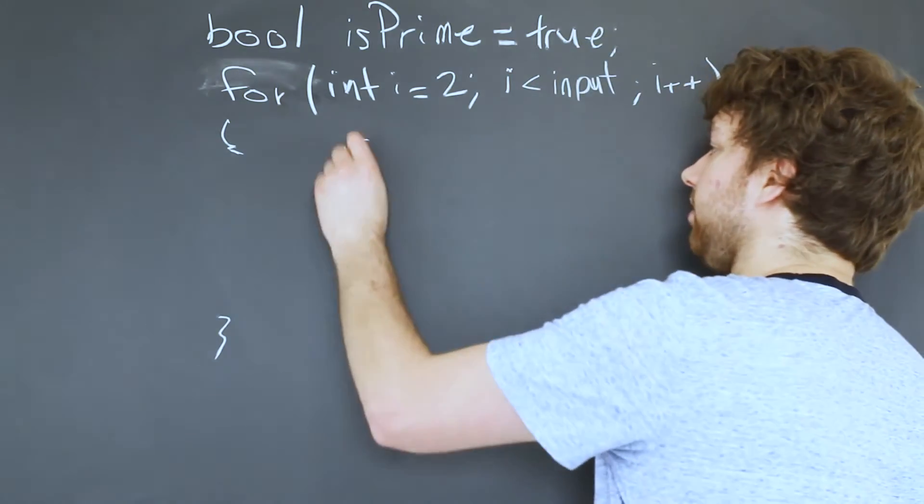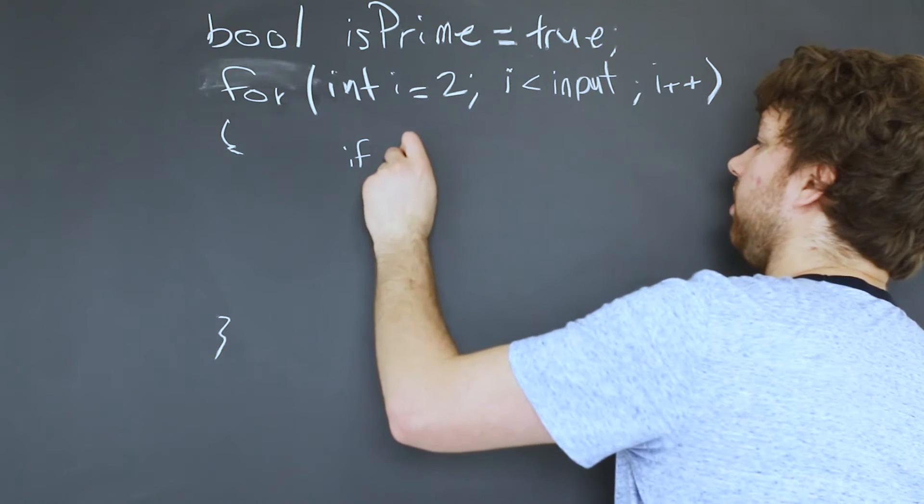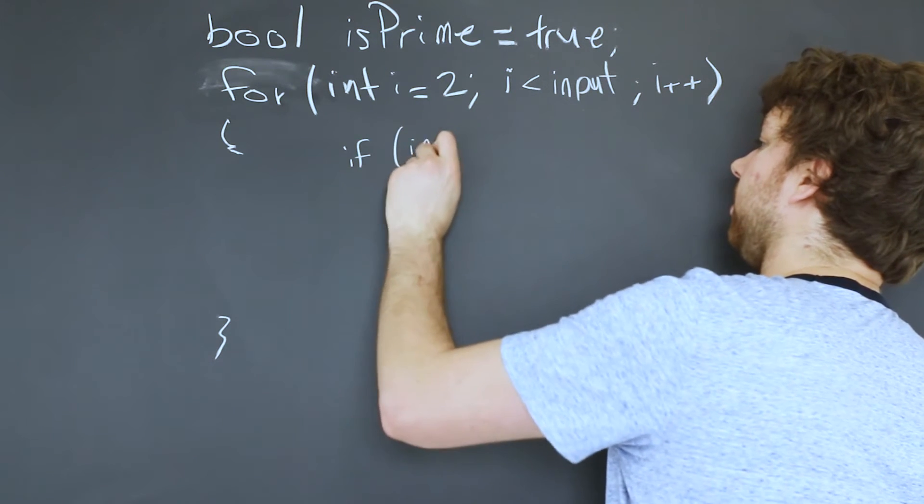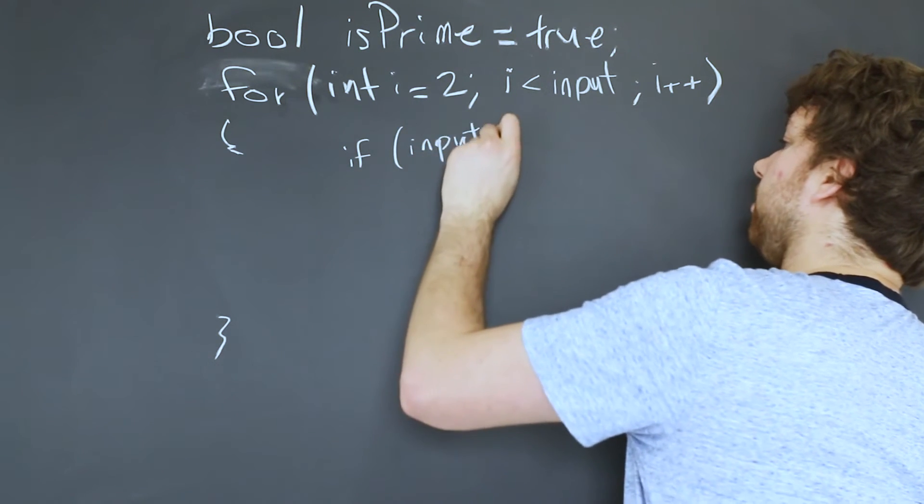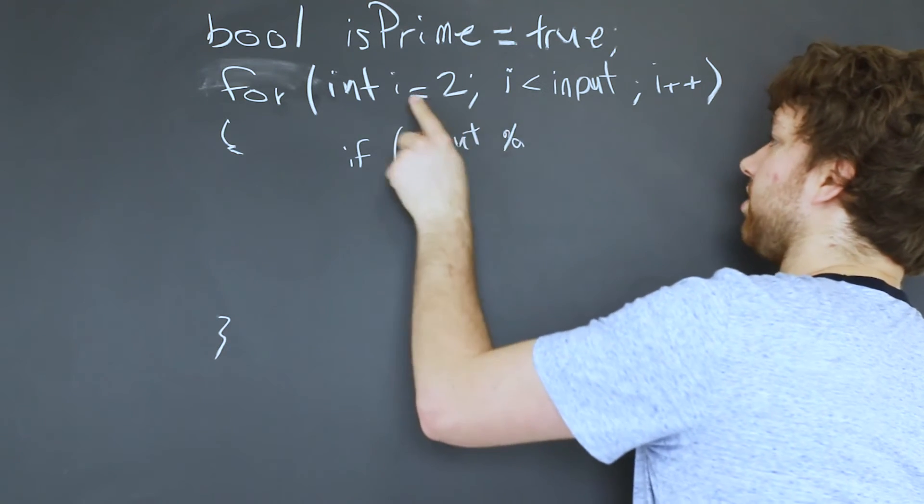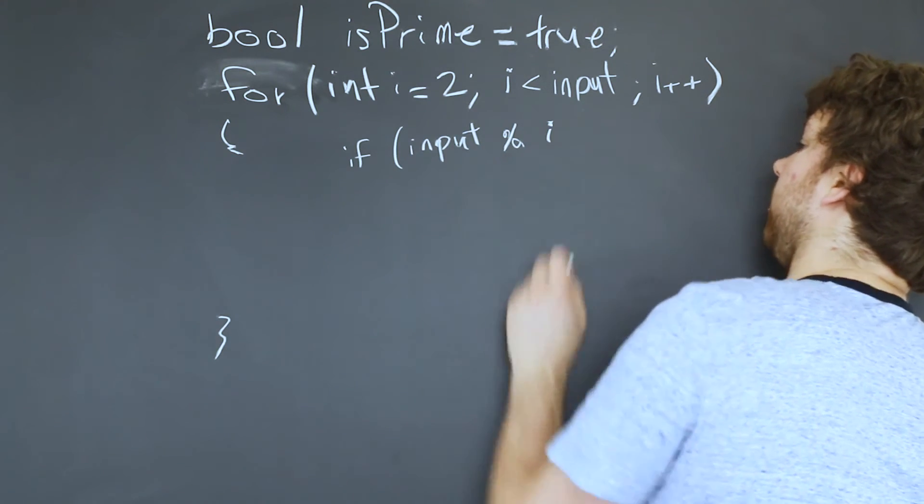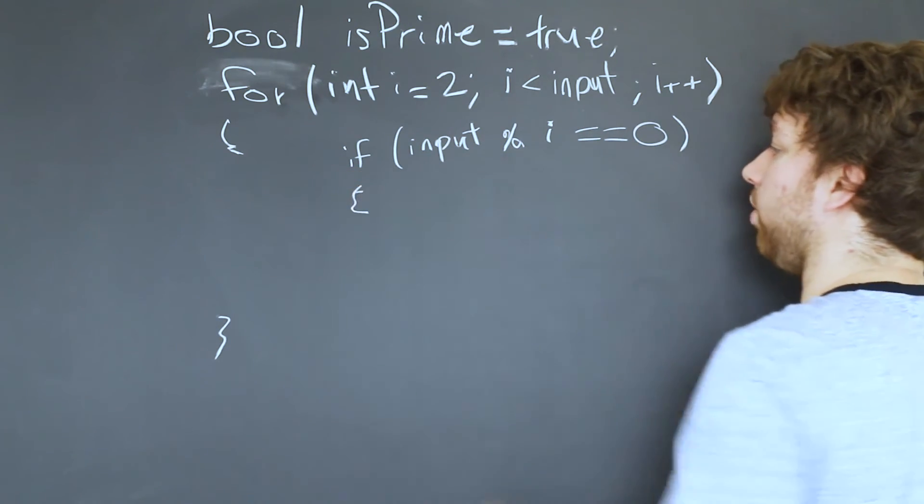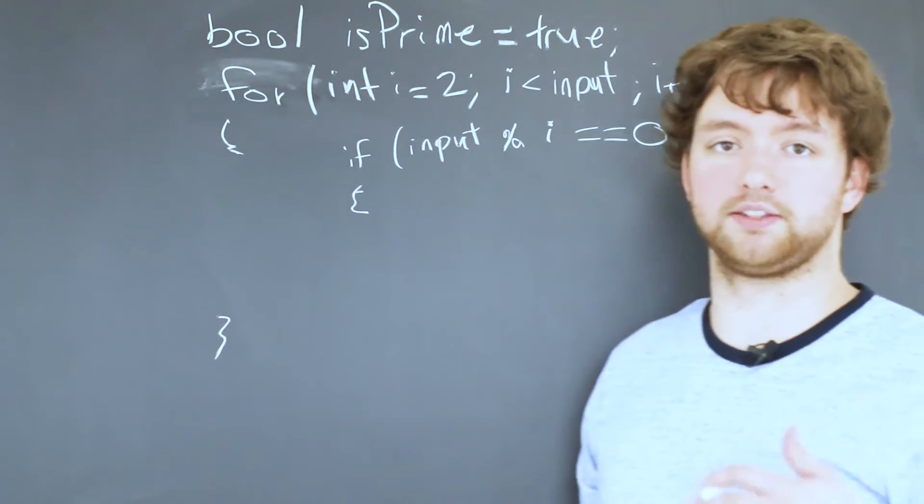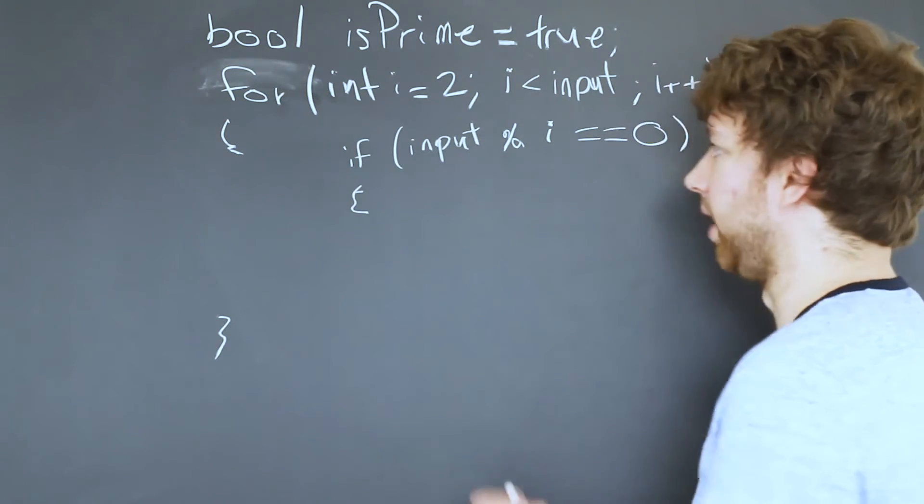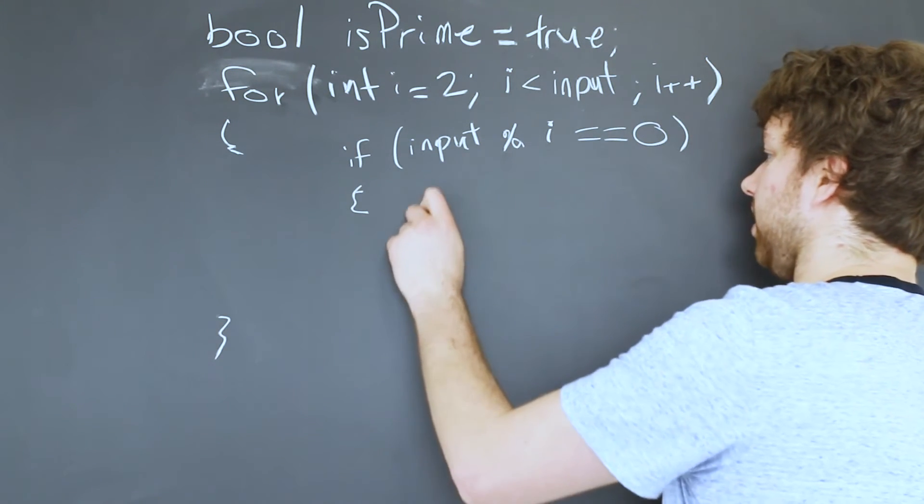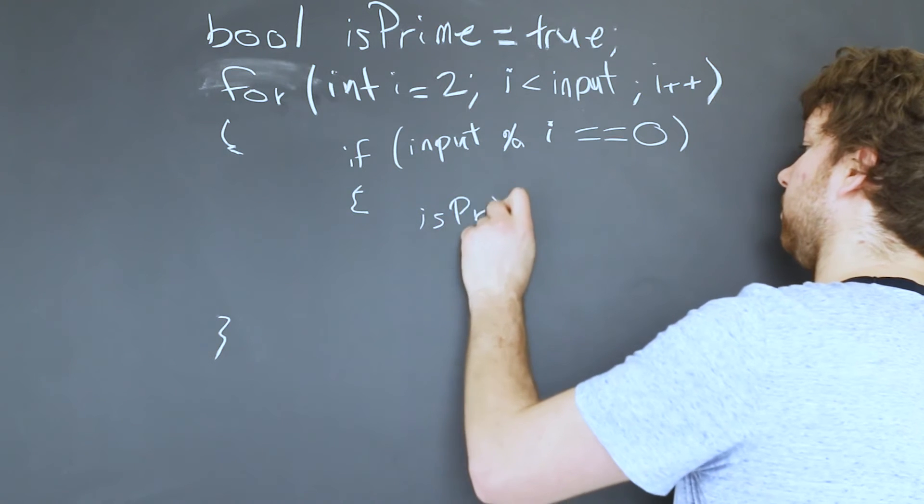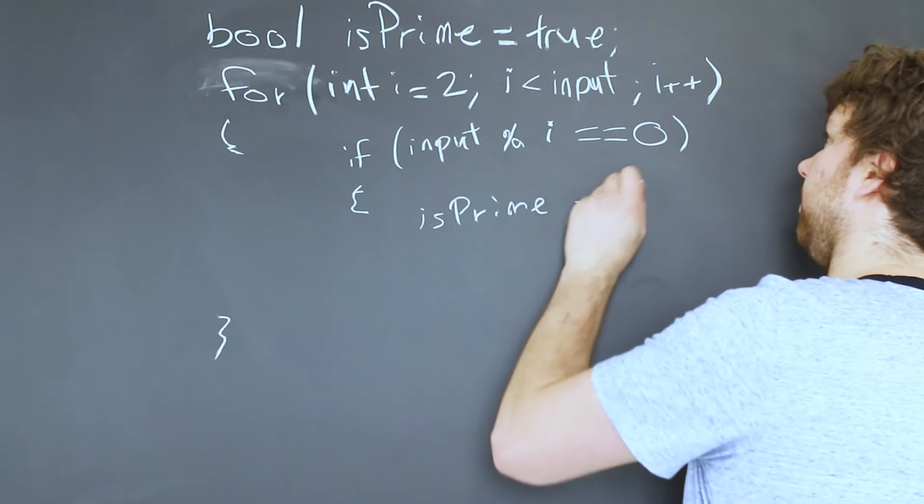And then we do an if statement. So if input modulus i is zero, if that's the case, then we know it's not a prime number because we had successful division with no remainder. So then we would say isPrime is now false.